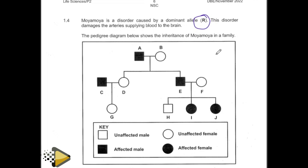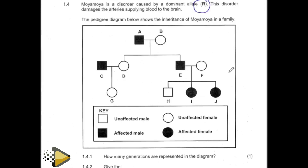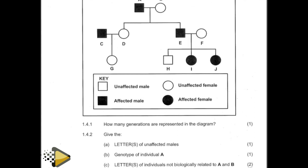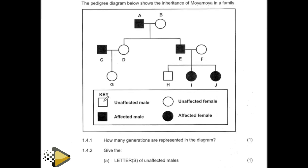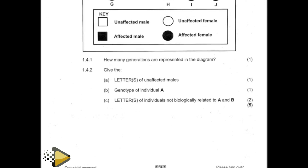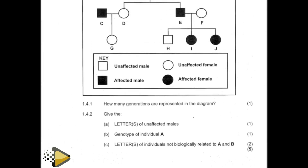Question number one: how many generations? Just count — one, two, three — three generations. So just put three there. They're saying the letter or letters of unaffected males. You have affected males here. You just come and look at who is indicated — who is H. So the answer becomes H. That's why it is also one tick, therefore the answer is H.